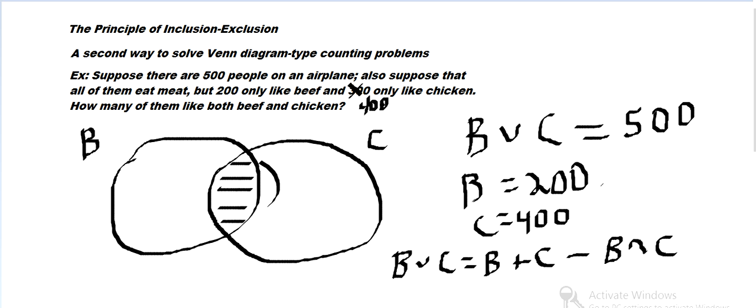So we can calculate: the union is 500, B is 200, C is 400, so that's 600. This is 500 equals 200 plus 400 minus the intersection. If we solve, this will end up being 100.